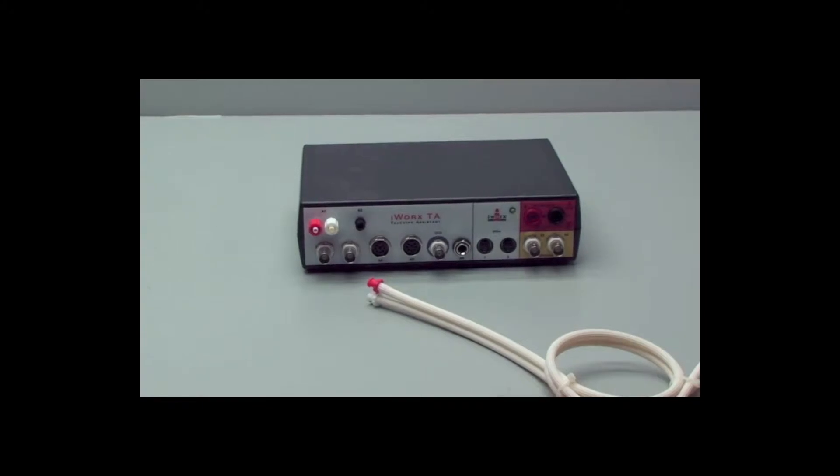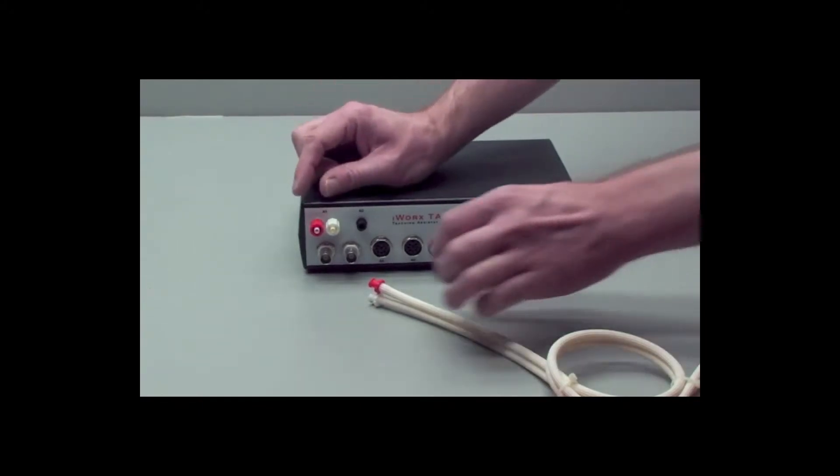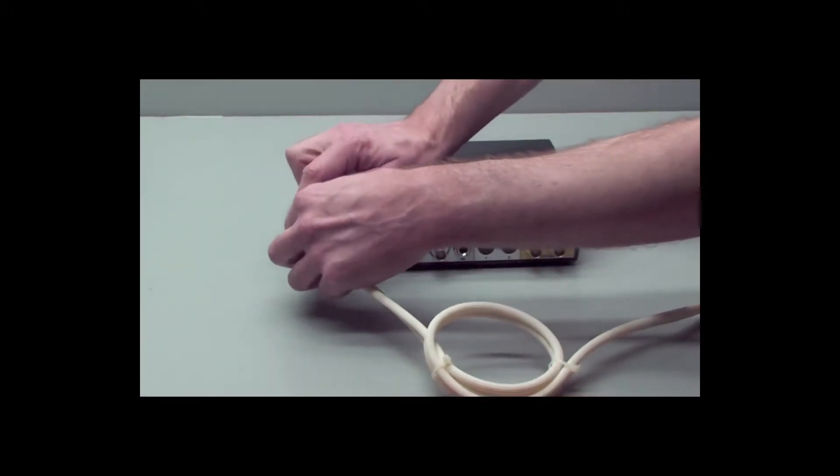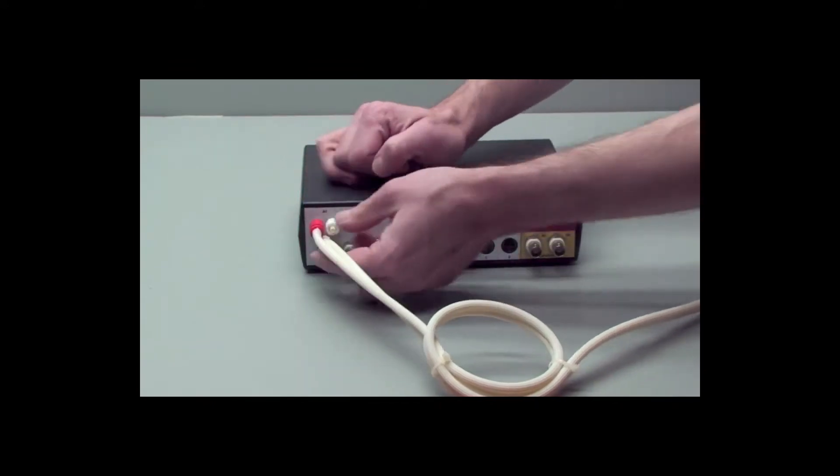Take your flow head tubing, and red goes to red on the front of the TA, and white goes to white.